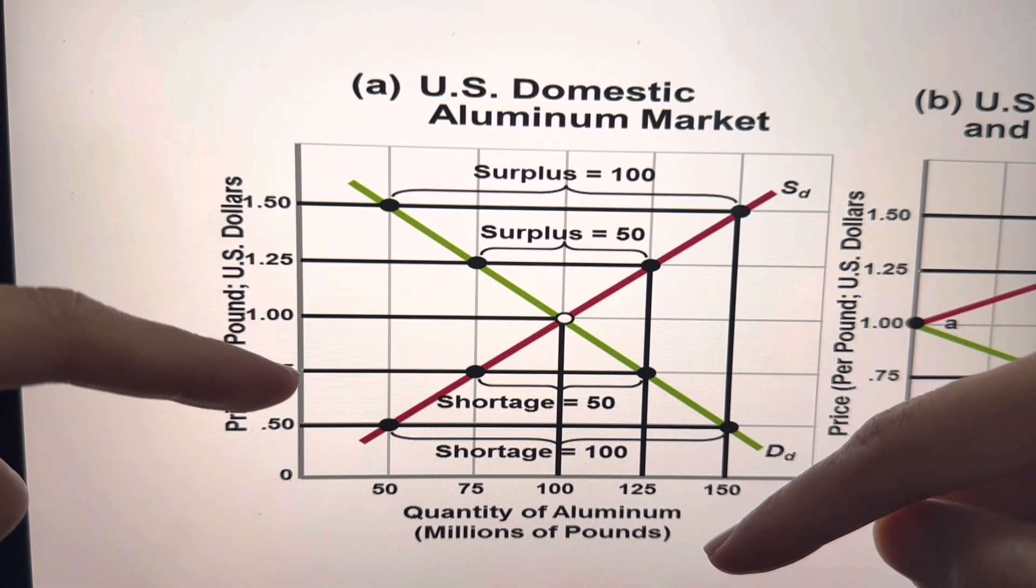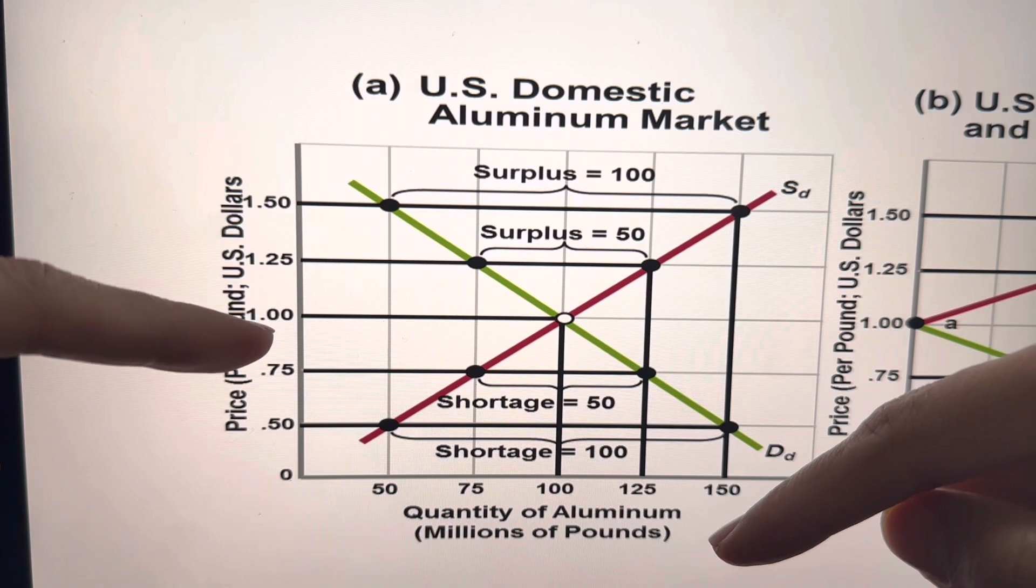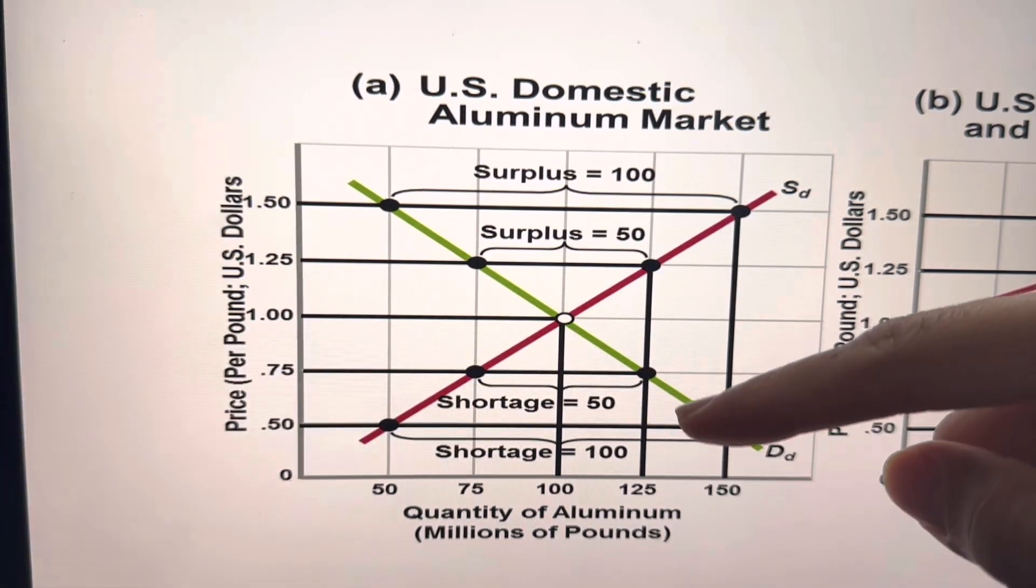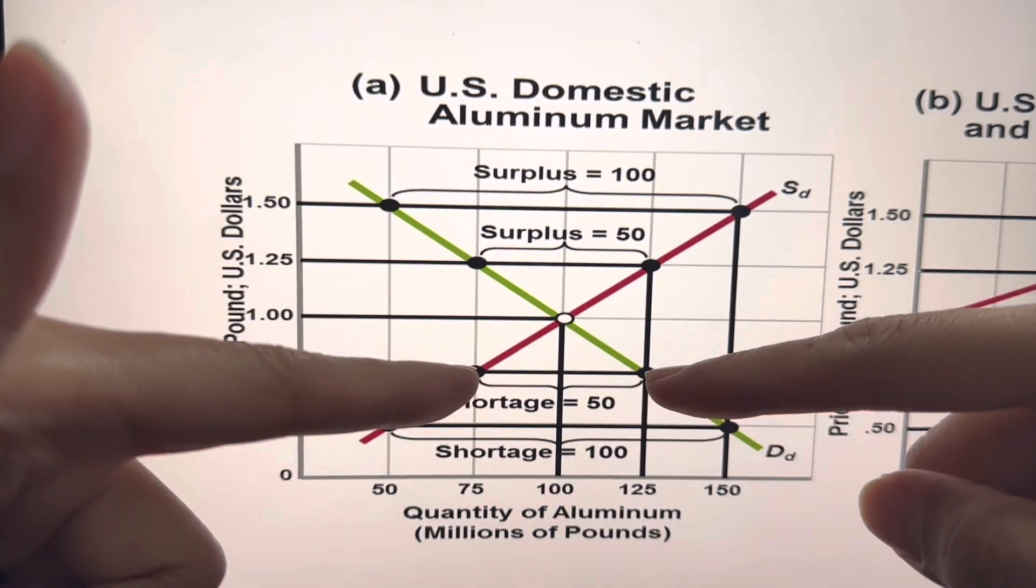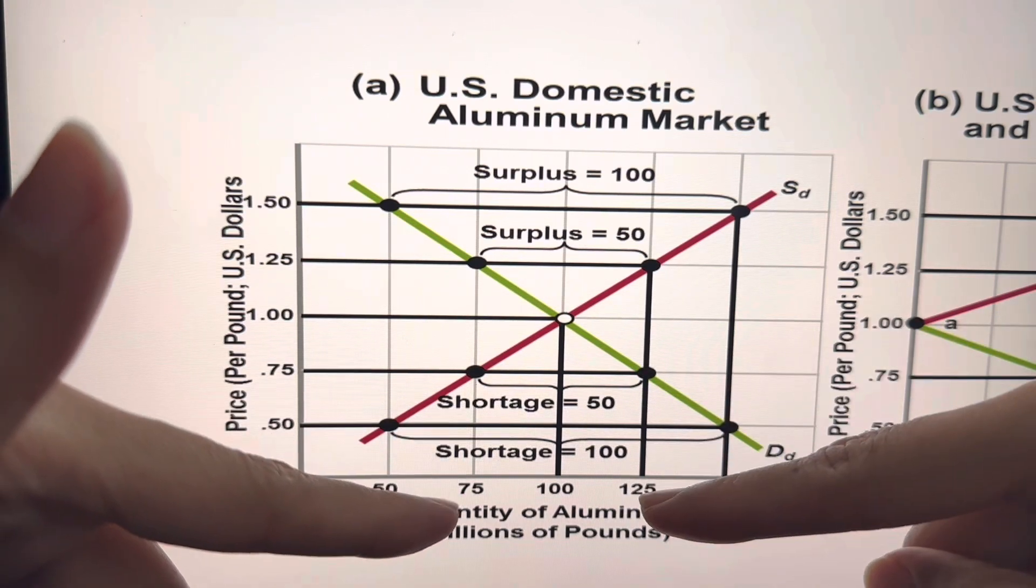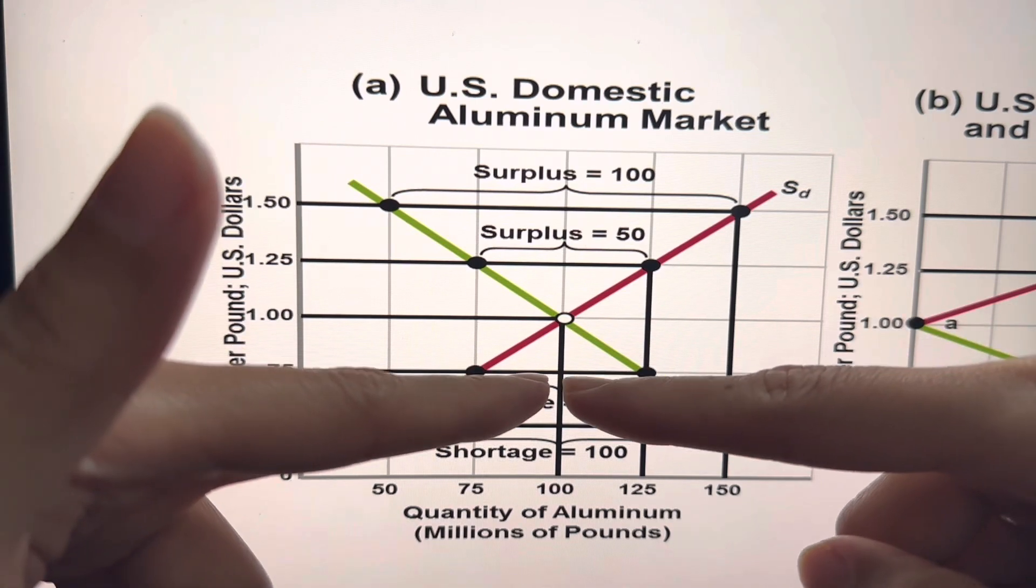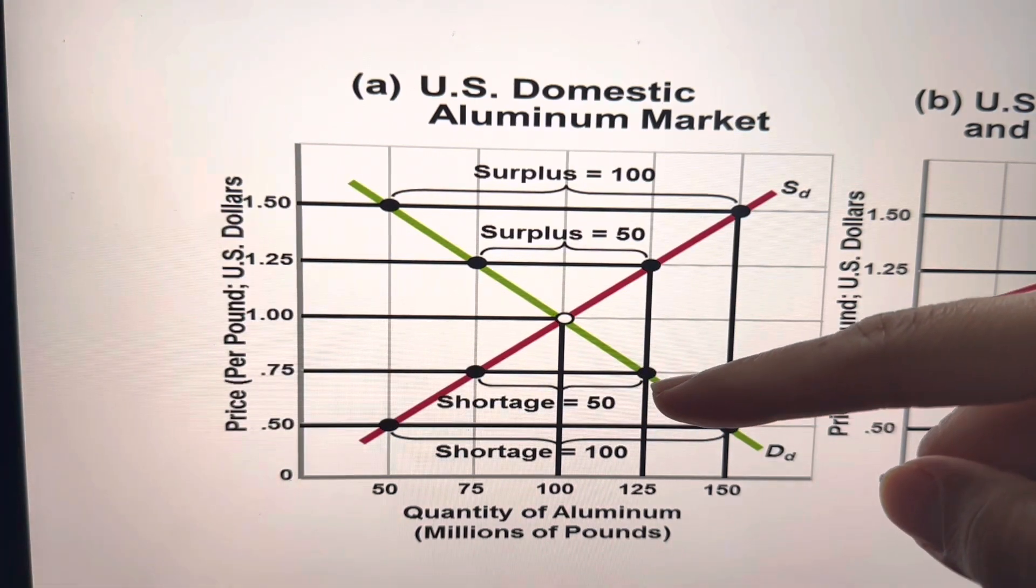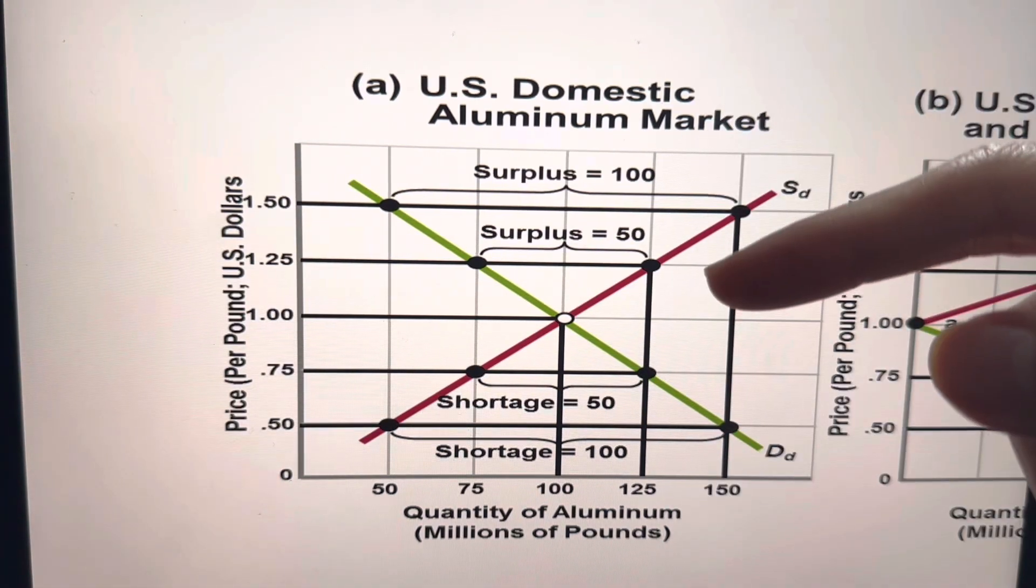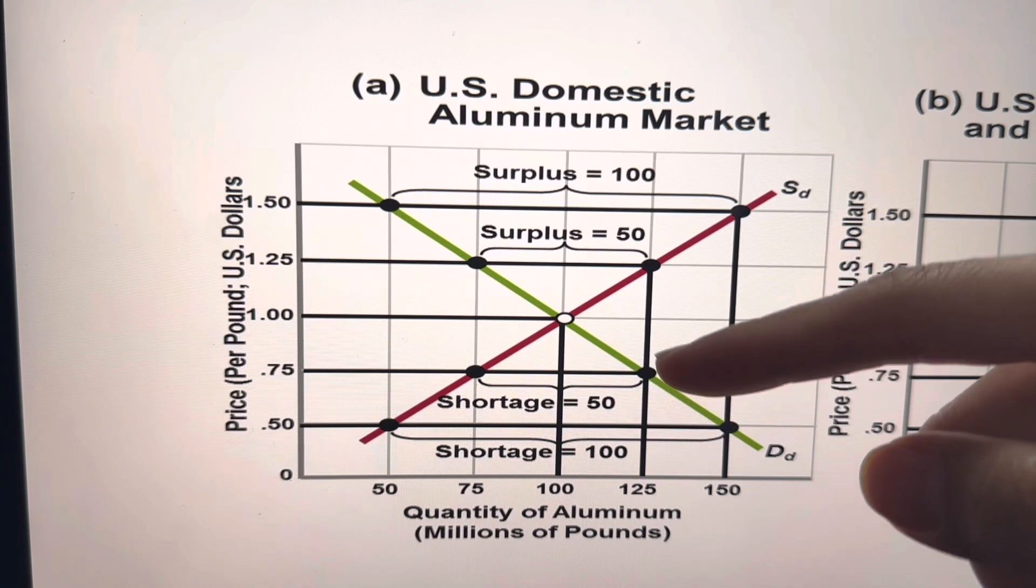So when the domestic price is lower than the equilibrium, we have shortage. How much is the shortage? You just deduct. Here, $1.25 minus 75, so 50. So this shortage of 50 here is basically what U.S. needs, right, because there's excess demand.